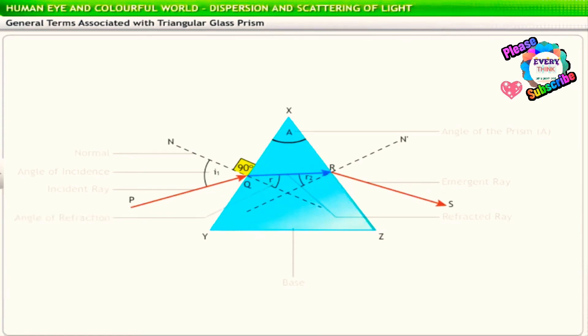In the absence of the glass prism, the incident light ray would follow the path PQ or Q'. Due to the prism, the light ray emerges along the path ORS. Thus, the light ray deviates from its initial path.